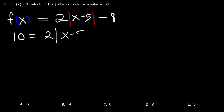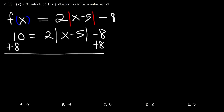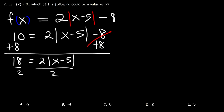Our goal is to solve for the value of x. Let's begin by adding 8 to both sides. Negative 8 plus 8 is 0. 10 plus 8 is 18. So now we need to divide both sides by 2. 2 divided by 2 is 1, and 18 divided by 2 is 9. So 9 is equal to the absolute value of x minus 5.